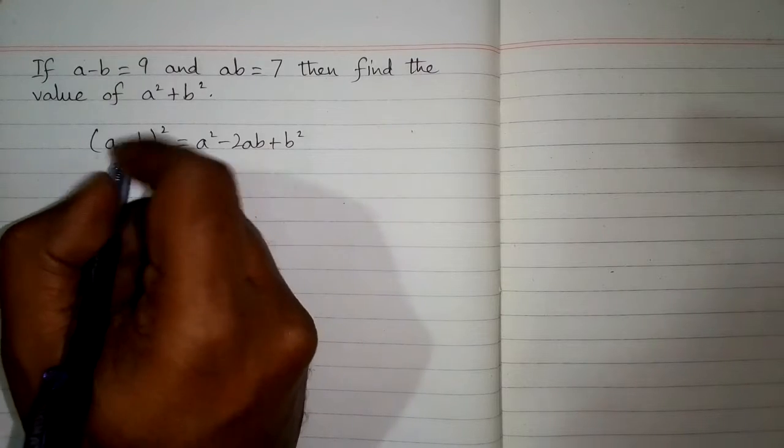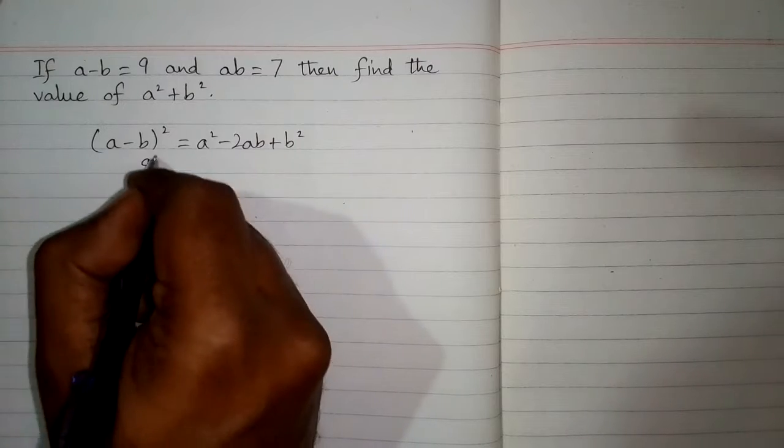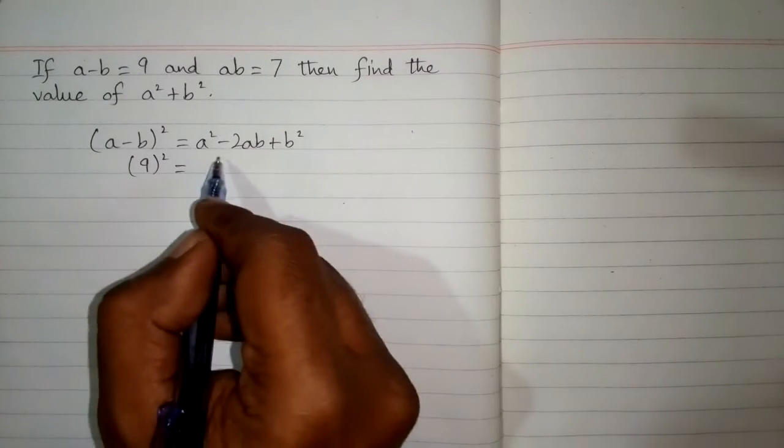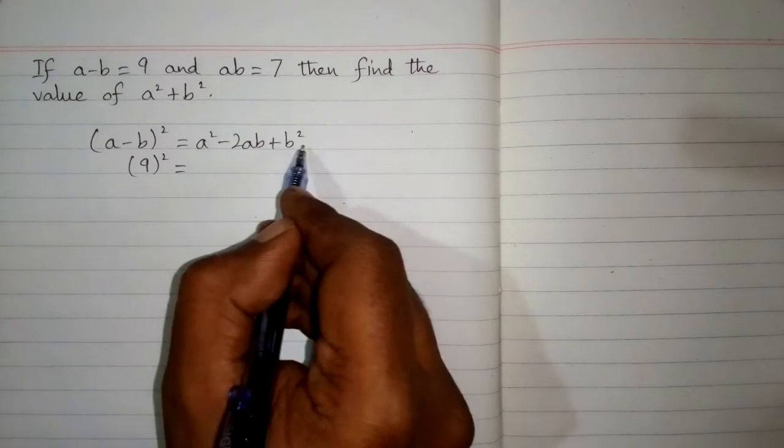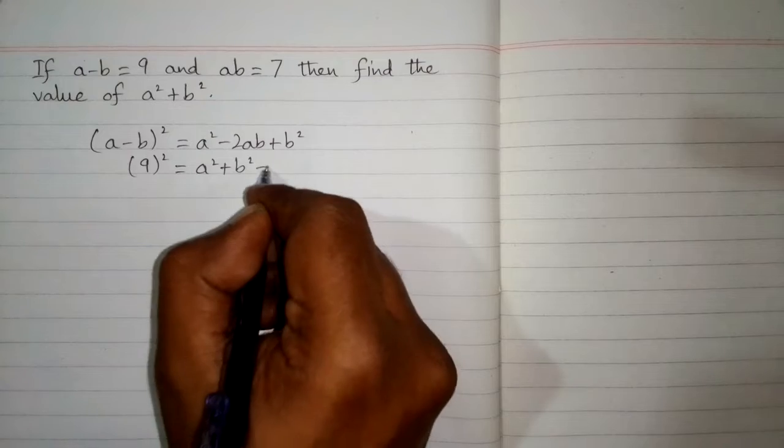Now A minus B is equal to 9, so we can put 9 in place of A minus B. So we have 9 squared is equal to A square minus 2AB plus B square, which can be written as A square plus B square minus 2AB.